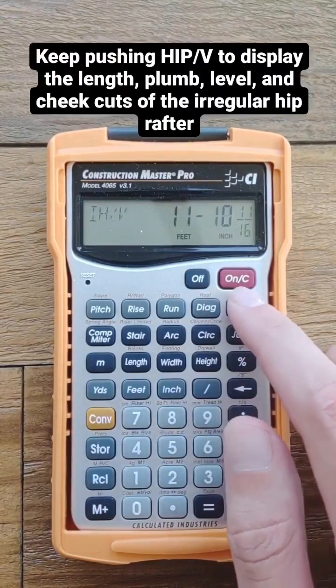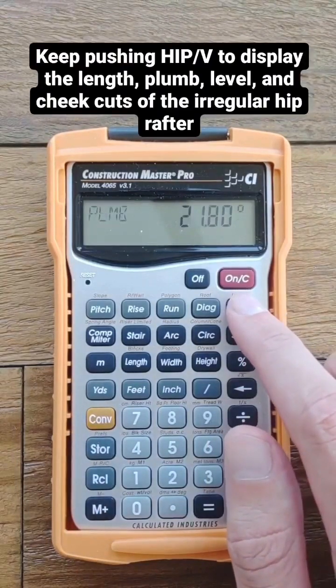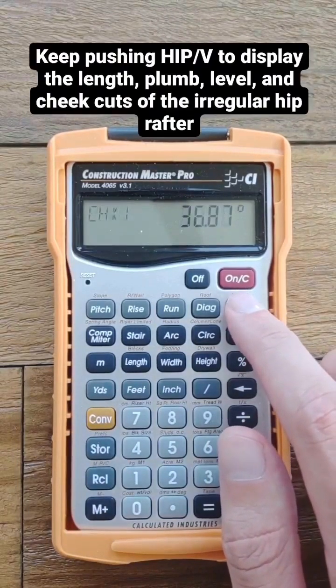Now, keep hitting the hip slash V key to toggle through all the cuts on your irregular hip rafter.